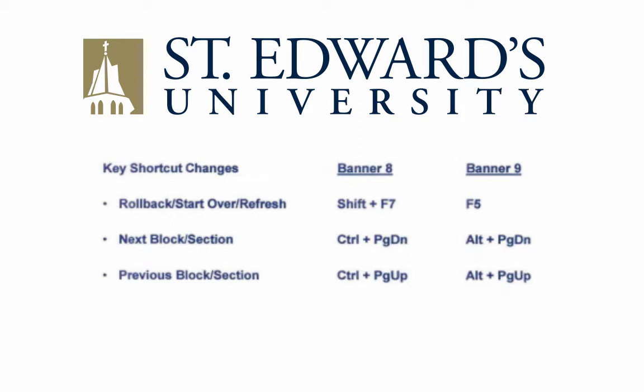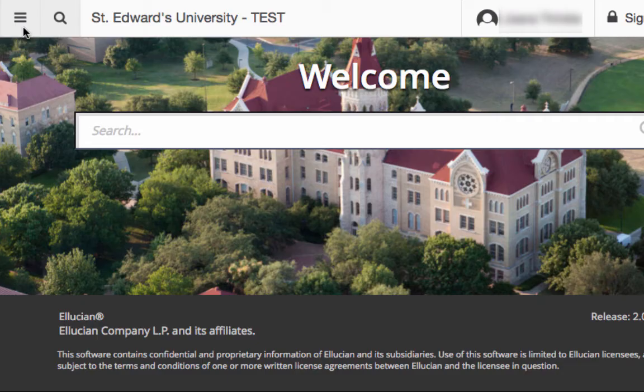There are also key shortcut changes. Banner 8 Rollback Shift+F7 is now Start Over Refresh F5 in Banner 9. Next block Control+Page Down in Banner 8 is now Section Alt+Page Down. Finally, Previous block Control+Page Up in Banner 8 is now Section Alt+Page Up. Let's take a look at the Application Navigator interface.